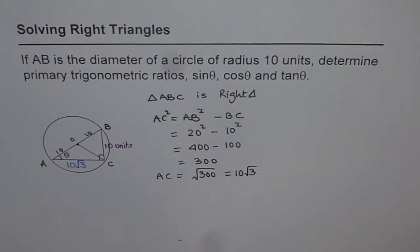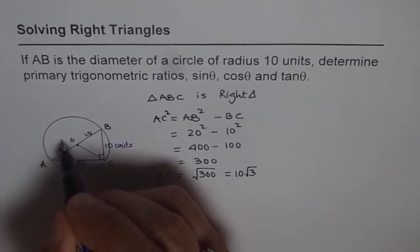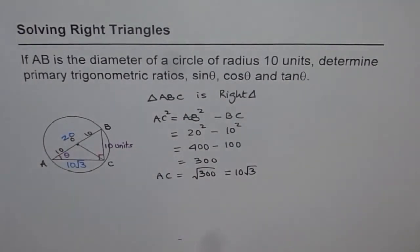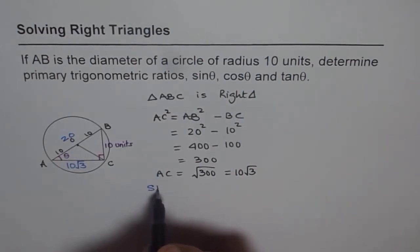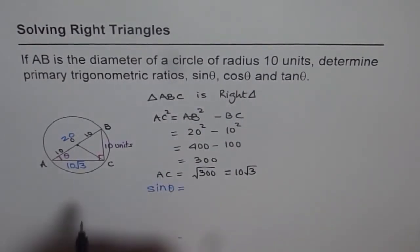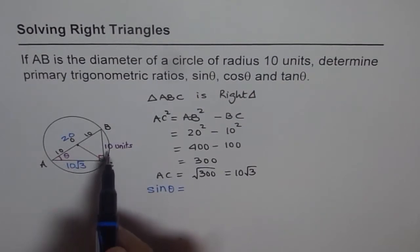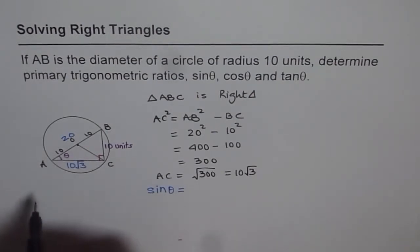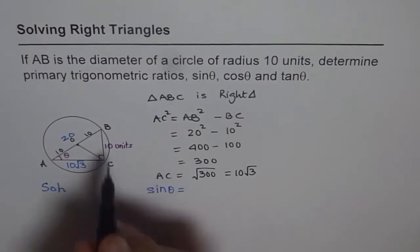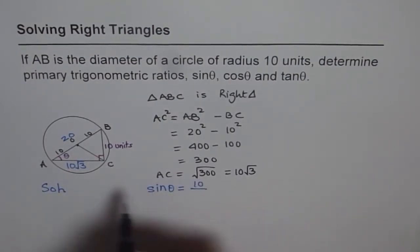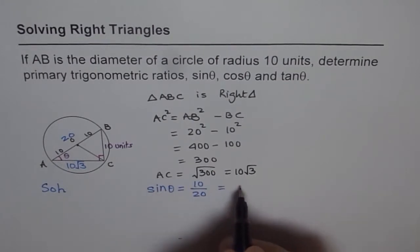Now from here we can find the trigonometric ratios. We have a right triangle with all sides known to us. AB is 20, the diameter. What is sin now? We can write sin θ as equal to opposite over hypotenuse. Let me write the short form which we all know, SOHCAHTOA—sin is opposite over hypotenuse. So sin is opposite 10 and hypotenuse is 20, so we get a value of 1/2.